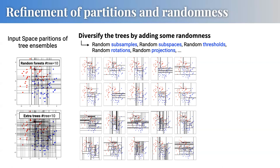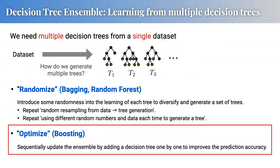Other randomization approaches exist — instead of random subsampling, you could apply random rotation or random projection. Anyway, if we randomize the data and apply decision trees, we can have a good tree ensemble. This concludes the story of the first strategy — the randomized type — and now we move on to the second strategy: the optimized type, i.e., boosting.